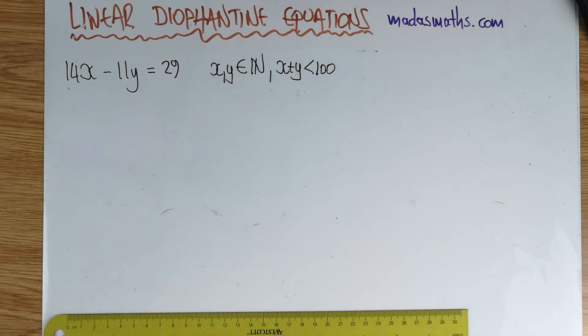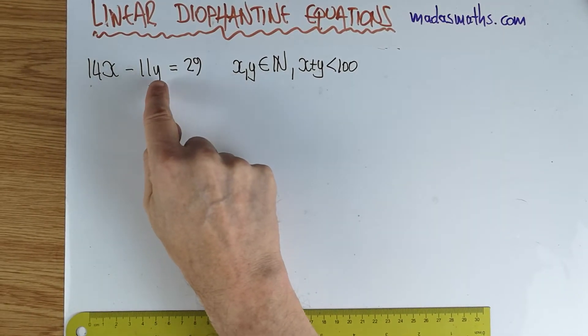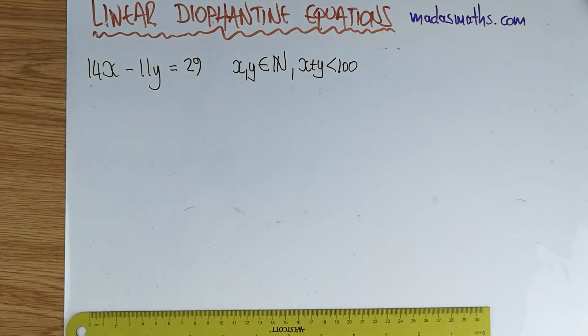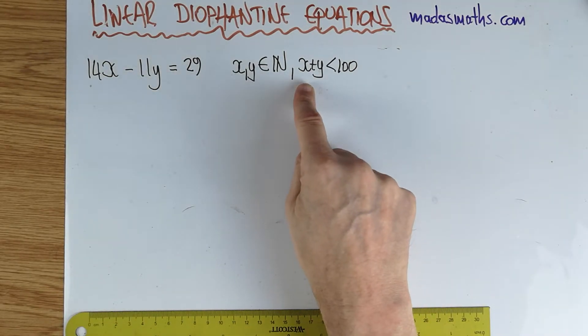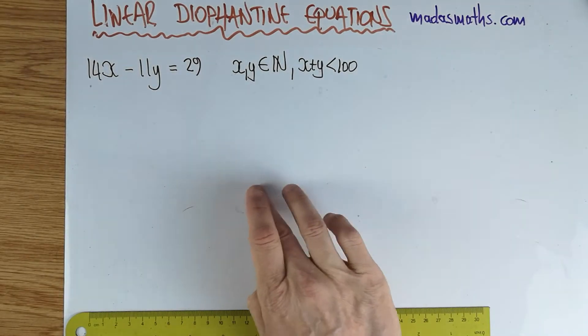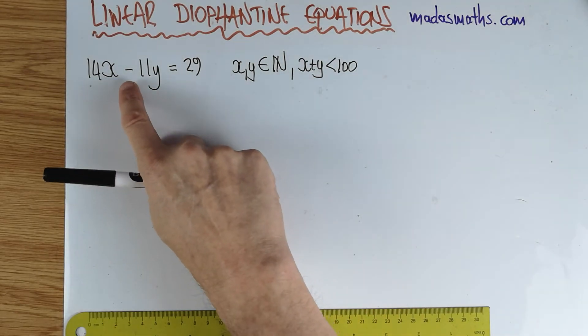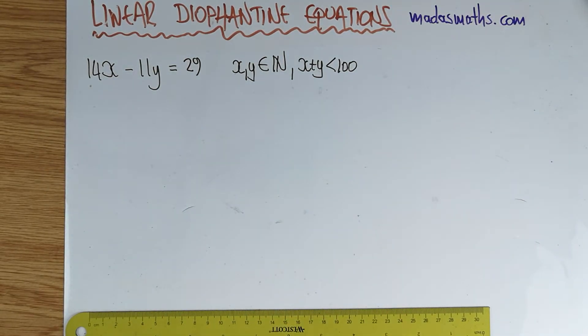Okay, here it is. We're trying to solve 14x minus 11y is equal to 29, where x and y are natural numbers. So because this is a straight line, it has infinite solutions. And we have an additional condition, x plus y must be less than 100.